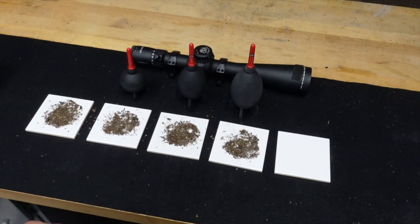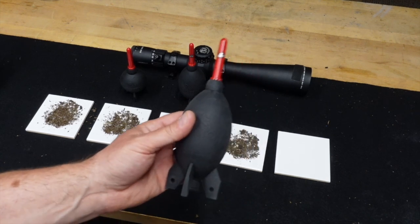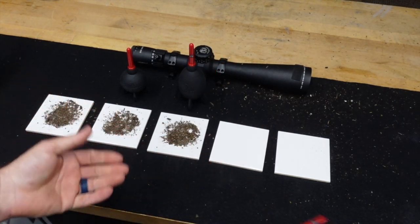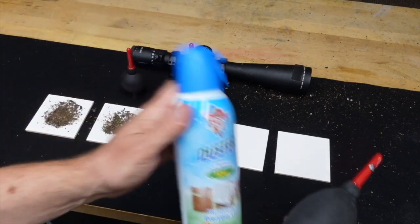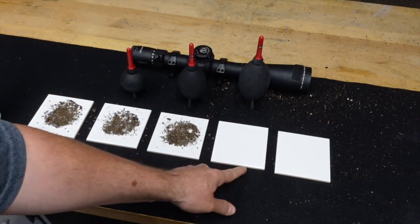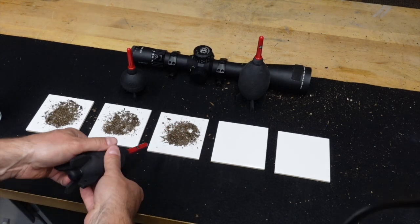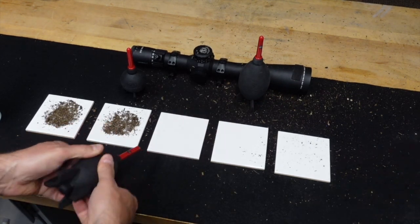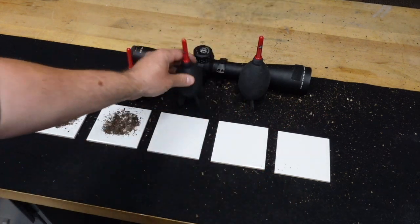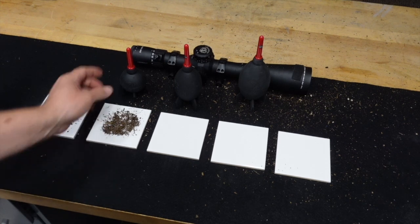Then we have the large air duster. Again, in a matter of several strokes, no different than this, we have a completely clean piece of tile. Let's see what two strokes from the medium one does. Okay, so about the same. You can tell there's a little less air pressure coming out of that one.